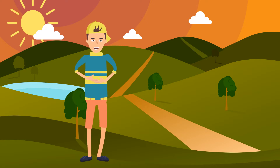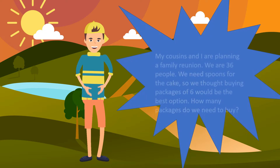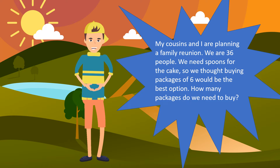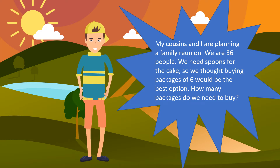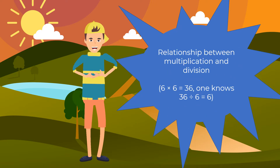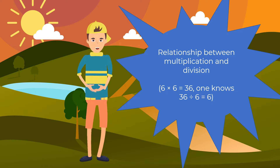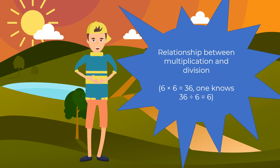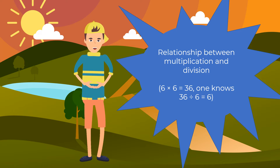Here are some examples. My cousins and I are planning a family reunion — we are 36 people. We need spoons for the cake, so we thought buying packages of 6 would be the best option. How many packages do we need to buy? There is a relationship between multiplication and division. This means if 6 x 6 equals 36, we know 36 divided by 6 equals 6, meaning we need to get 6 packages of spoons.